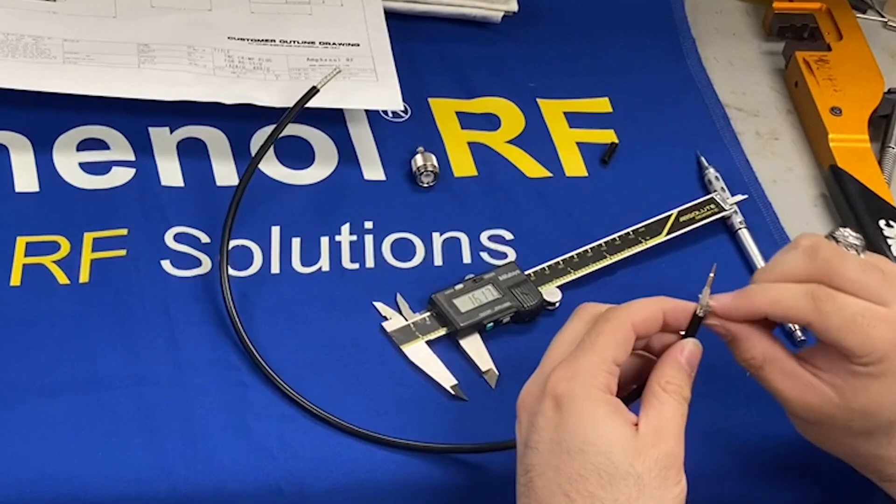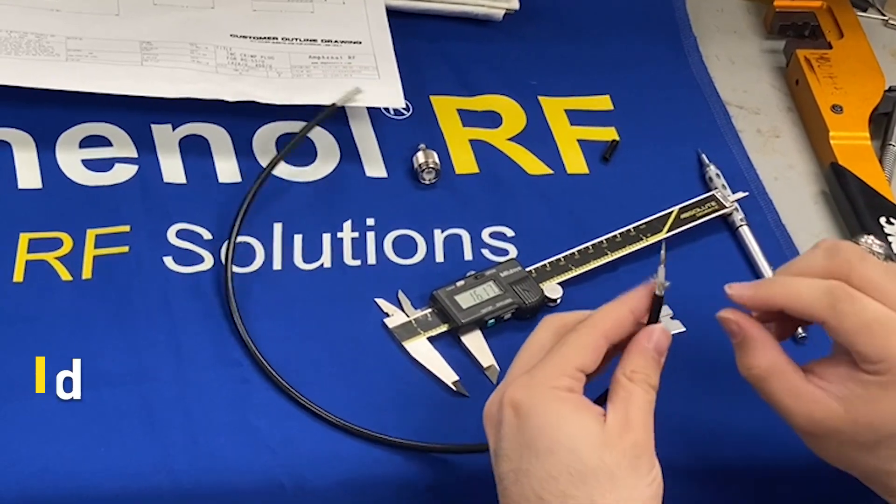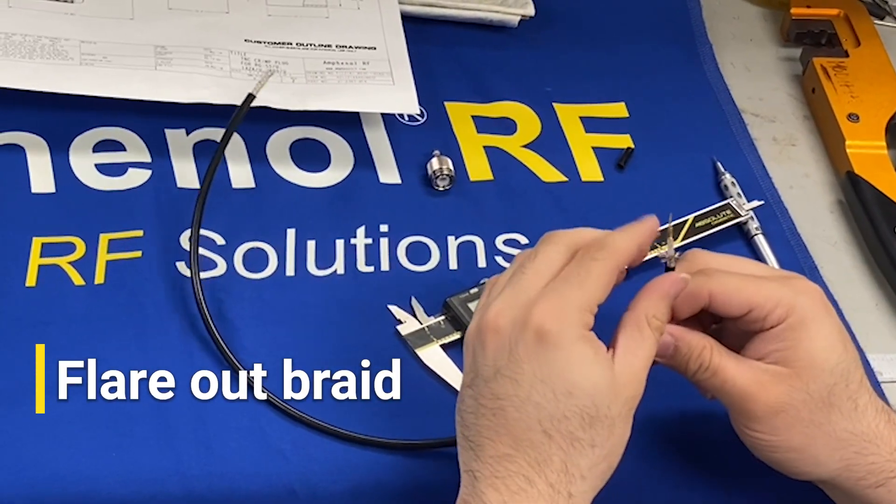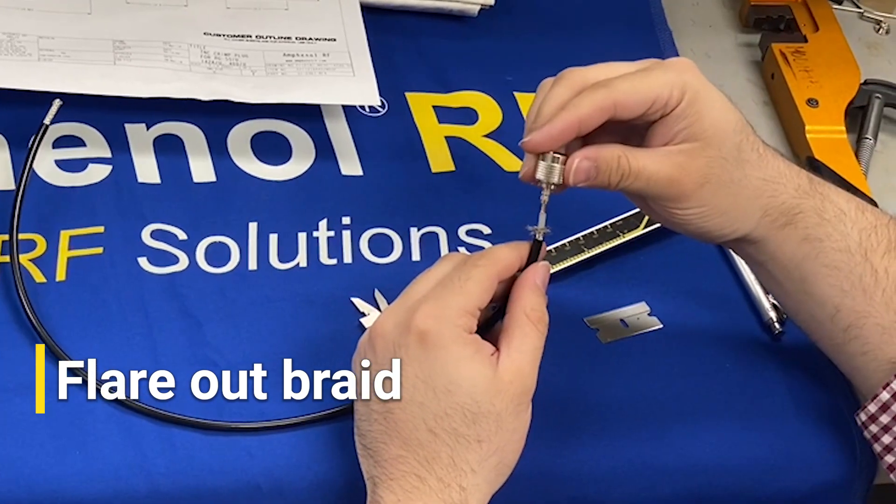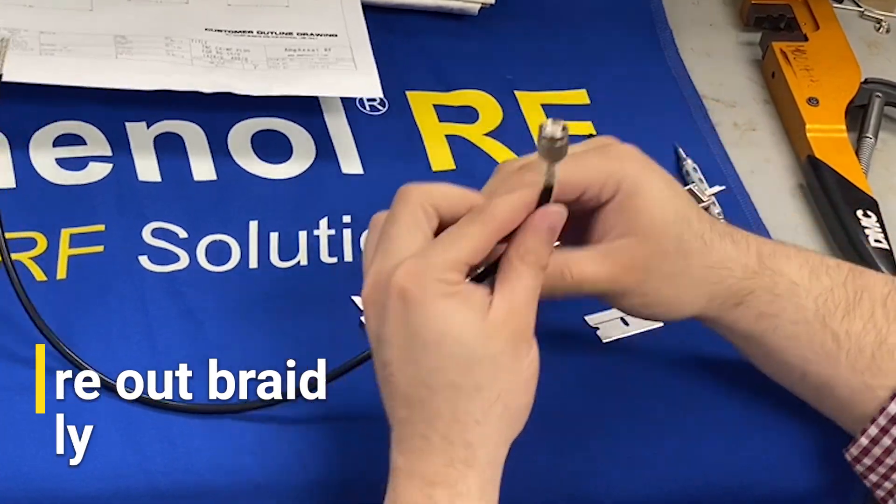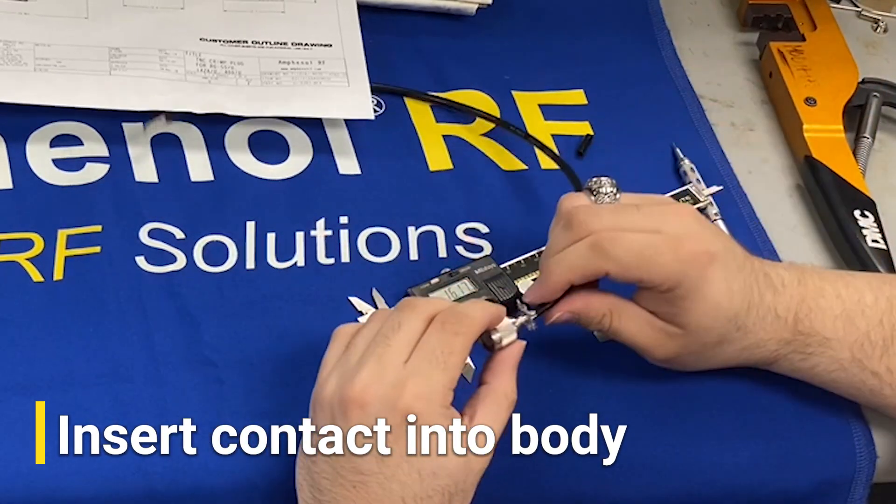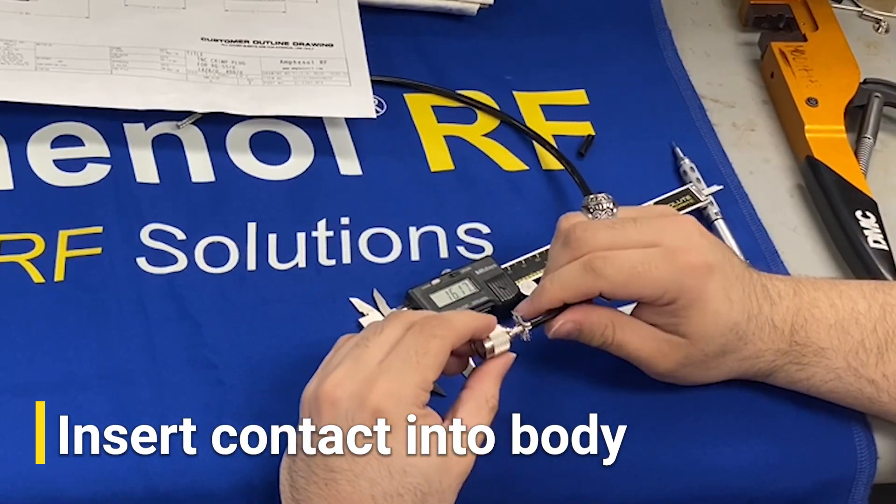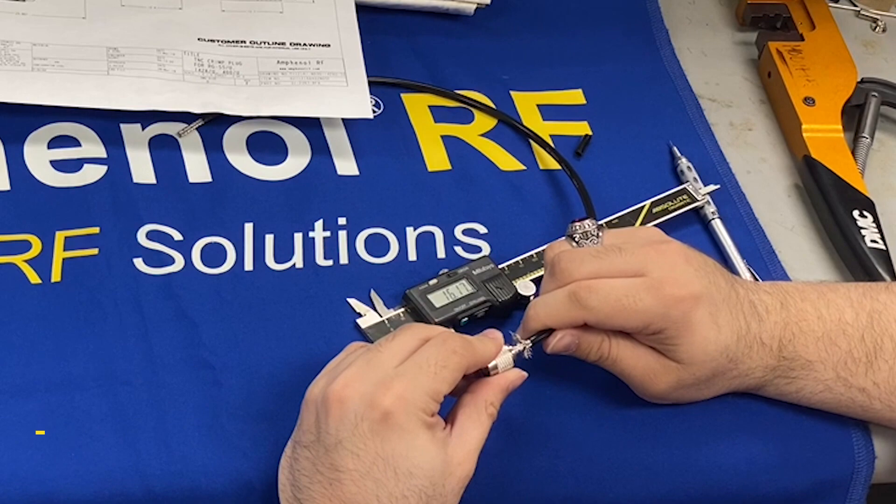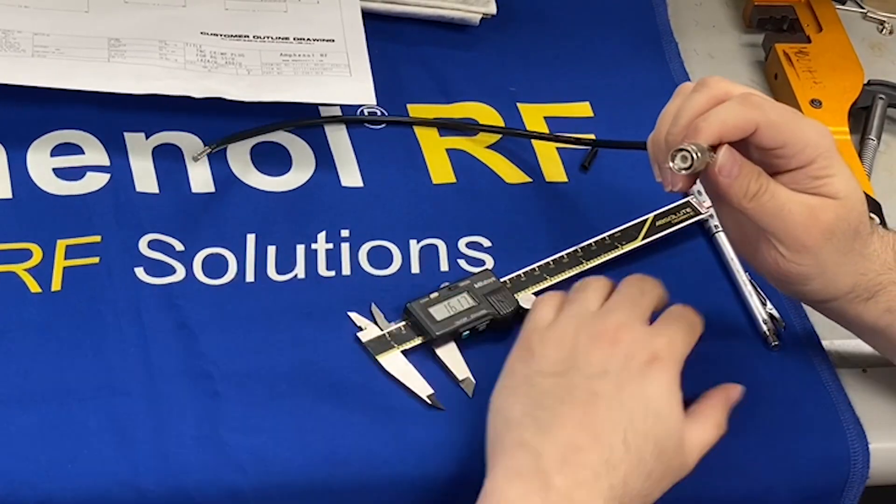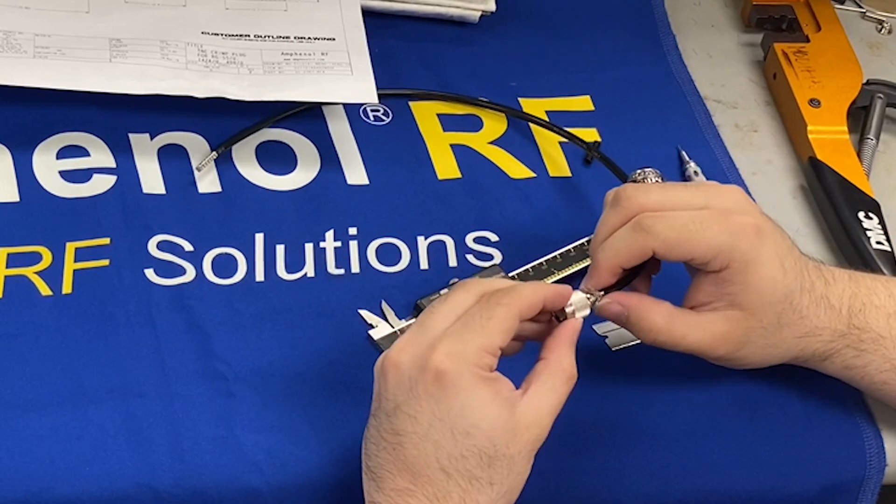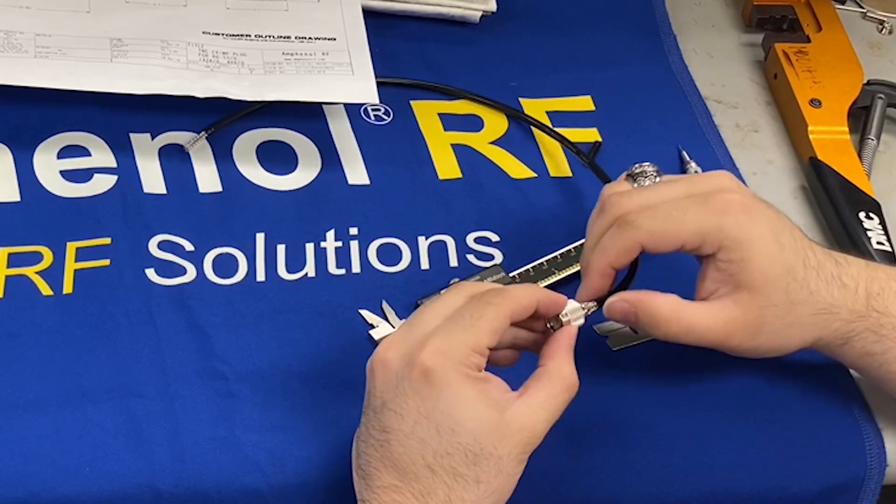We will now take the braid and flare that out. And take our main body and insert the contact into the body. On this particular connector, there is a snap groove, so we will feel a click when it is inserted completely. The braid is then flared back down.